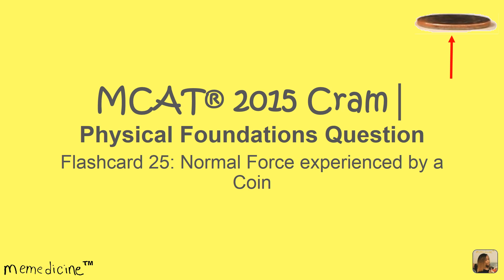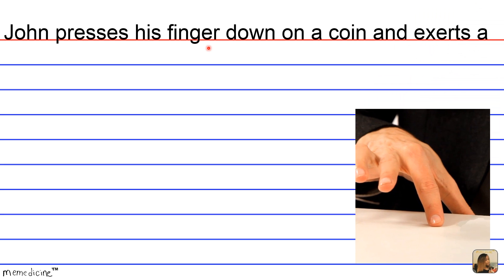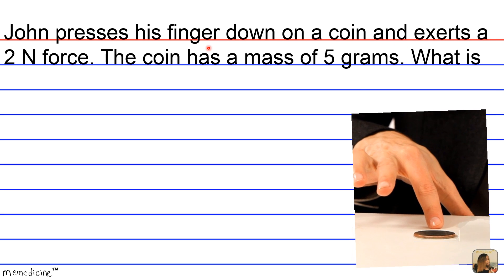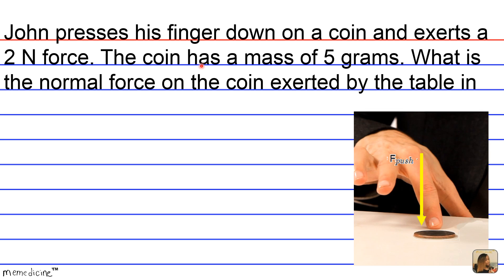Let's delve into the question. John presses his finger down on a coin and exerts a force of two newtons. The coin has a mass of five grams. What is the normal force on the coin exerted by the table in which John presses against?